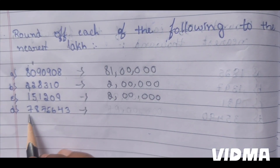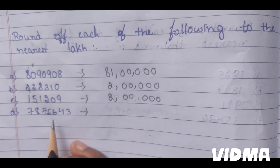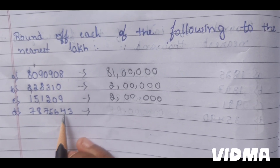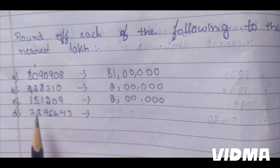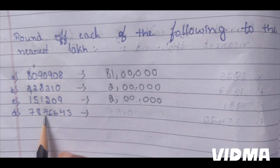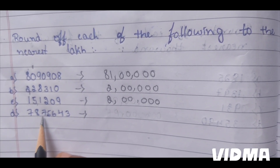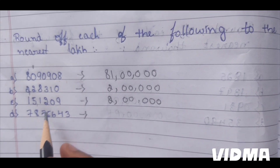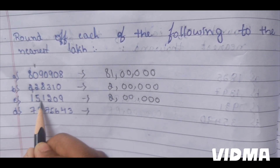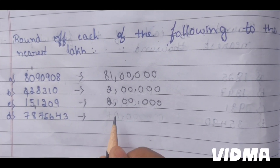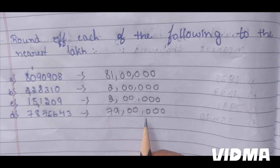Next, 78,75,643. Here in the 10,000 place, it is more than 5. So we have to add 1 to the lakh place. 79 lakh.